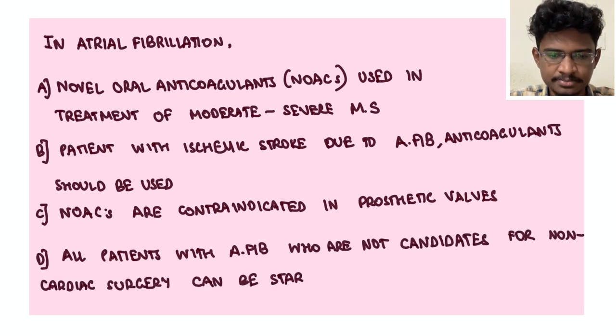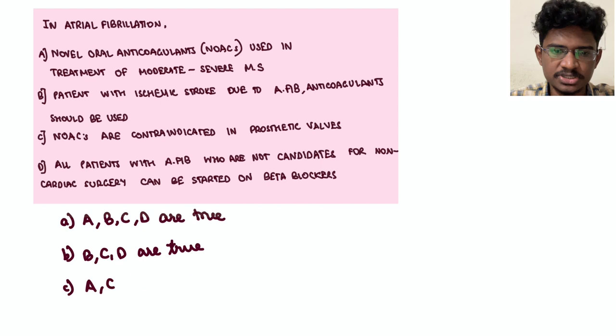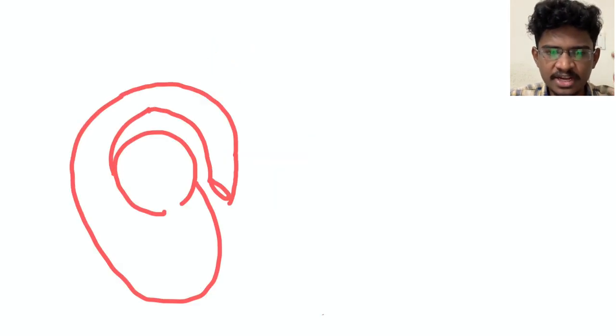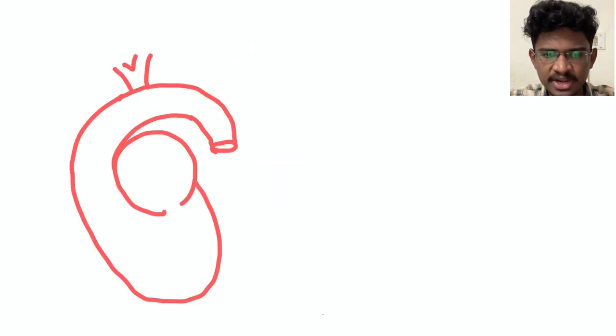Option D: Beta blockers can be given in patients who are not candidates of cardiac surgery in atrial fibrillation. So what are the options that are true?